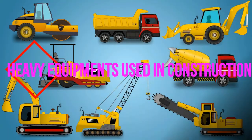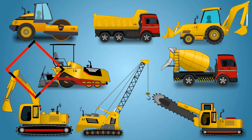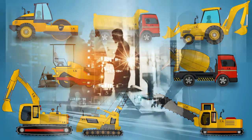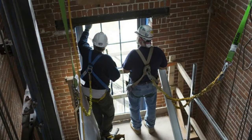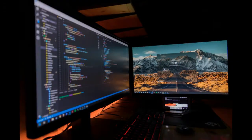Types of Heavy Equipment Used in Construction. Heavy construction equipment are used for various purposes in large projects. Selection of different types of heavy equipment depends on the size of the work and economy of the project. These make the construction process easier and faster.